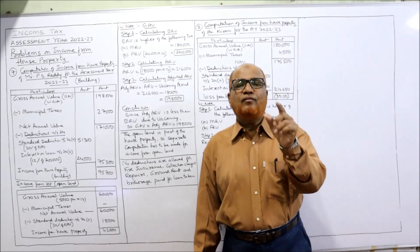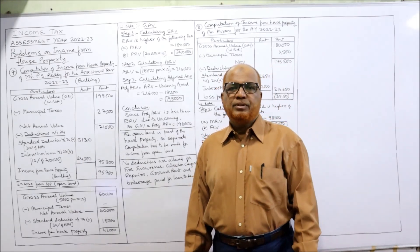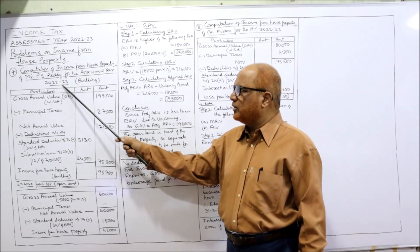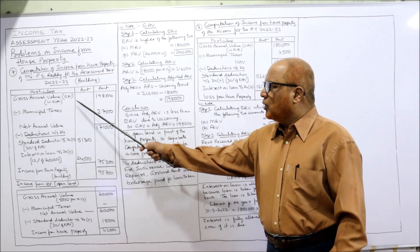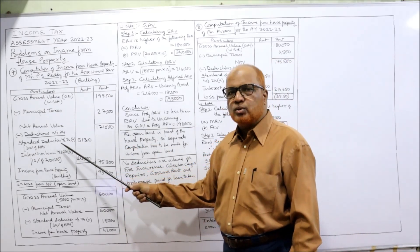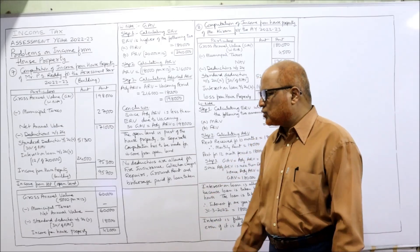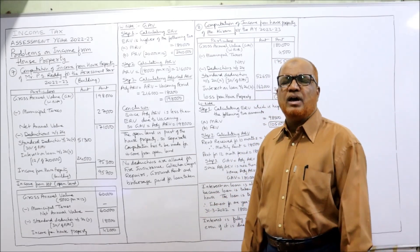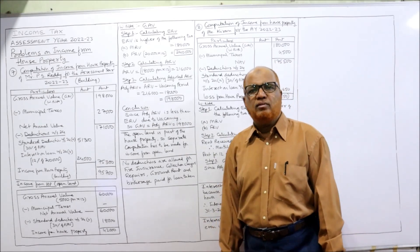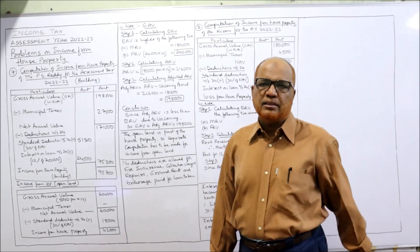The only new point in this problem is that the house was vacant for one month, so the vacancy period should be deducted. Computation of income from house property of Mr. P.S. Ruddy for the assessment year 2020 — building: first we calculate Gross Annual Value, minus municipal taxes to get Net Annual Value, then deductions under Section 24A (30% of NAV) and Section 24B (interest on loan). We have to be careful regarding the calculation of GAV since the house remained vacant for one month.